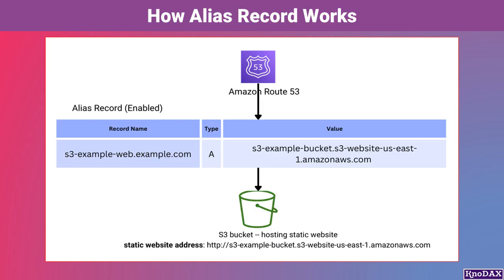This diagram illustrates how an ALIAS record works in Amazon Route 53. At the top, we have Amazon Route 53 managing the DNS records. An ALIAS record is set up with the record name s3-example-web.example.com. The record type is A, which maps to an IPv4 address, and the value points to an AWS resource — in this case, the S3 bucket s3-example-bucket.s3-website-us-east-1.amazonaws.com.